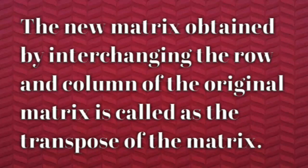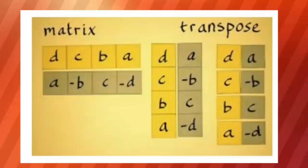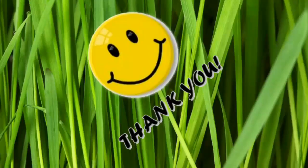The new matrix obtained by interchanging the rows and columns of the original matrix is called the transpose of the matrix. Here we have the example of a transpose of a matrix. Thank you.